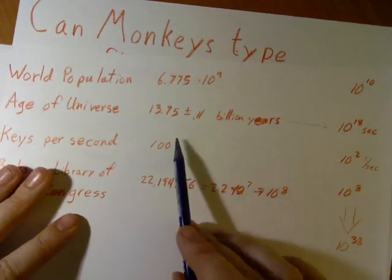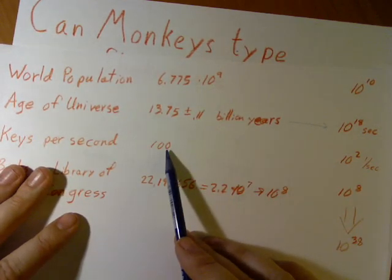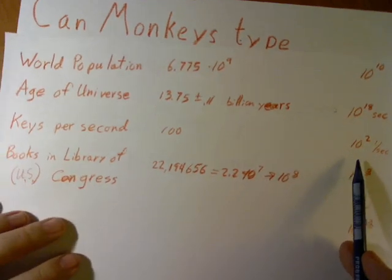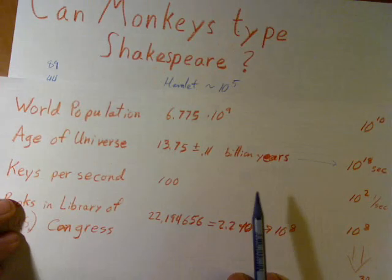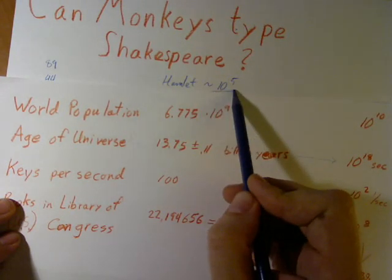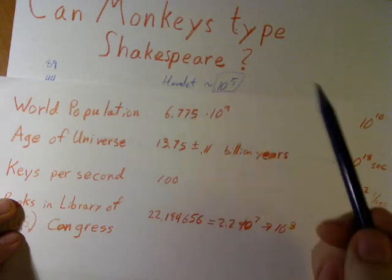These are fast monkeys. Let's say they type 100 keys per second. Really fast monkeys. Oh, and you know what? Let's not be picky. Why do we just have to get Hamlet? Let's get any book. We're going to assume they're still the same length, just to keep our calculations easy.